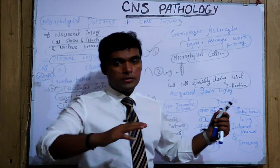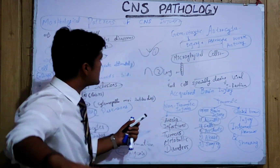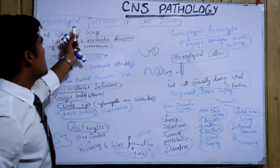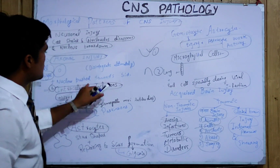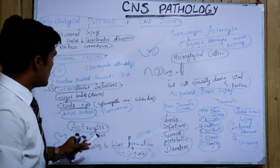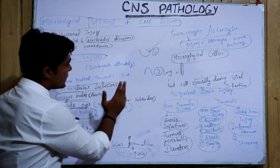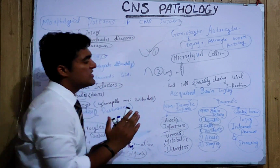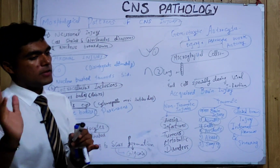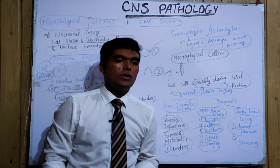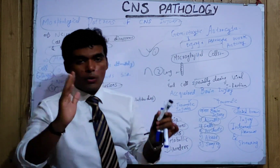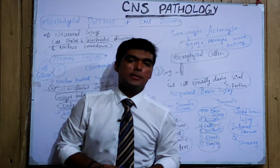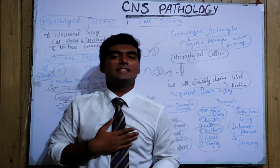In quick summary, we discussed the morphological patterns, the types of injury, the cells involved, and acquired brain injury with its types — traumatic and non-traumatic. Hope you all understood it well. Don't forget to follow Medical's Lectures by Shujat. Thanks so much.